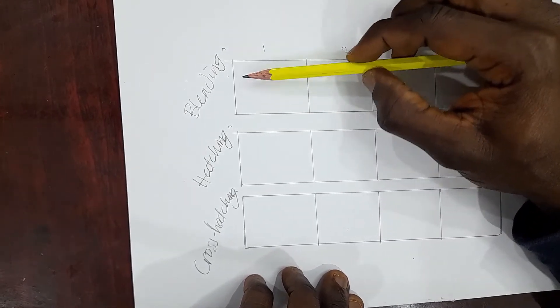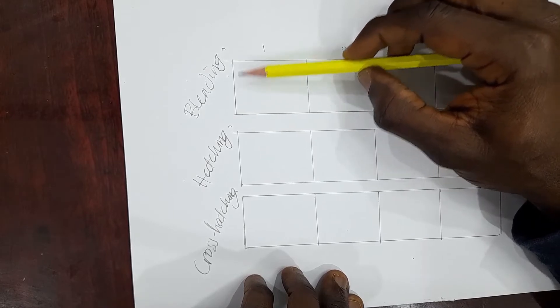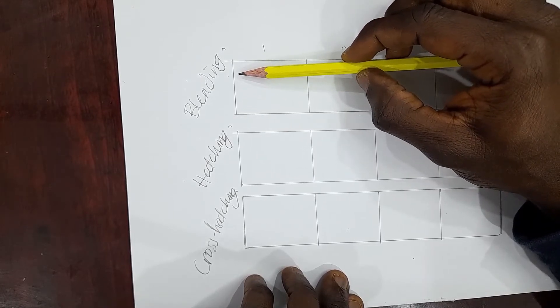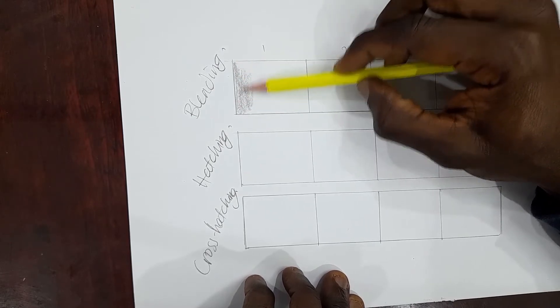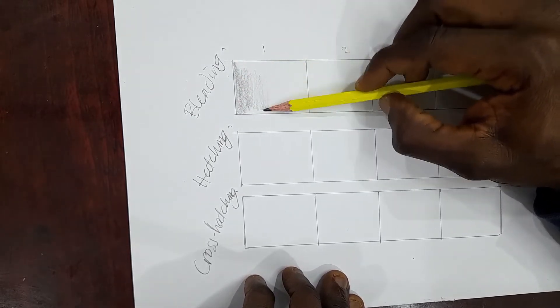You want to rub the side of the pencil on the paper to be able to achieve the effect you want. And feel free to turn your paper around. So this is going to be my lightest tone.